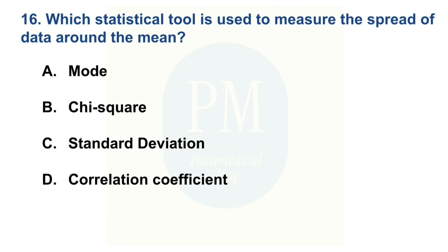Which statistical tool is used to measure the spread of data around the mean? Option A: Mode. Option B: Chi-squared. Option C: Standard deviation. Option D: Correlation coefficient. The correct option is Option C — Standard deviation.